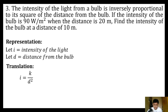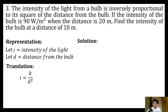Looking at our given, we have a pair of intensity and distance: 90 watts per square meter with a distance of 20 meters. We're looking for the intensity of the bulb at a distance of 10 meters. The next thing we need to do is get the constant of variation using the first pair of intensity and distance.